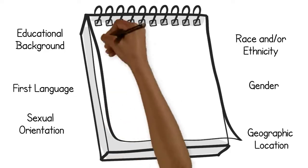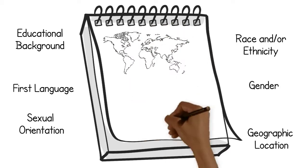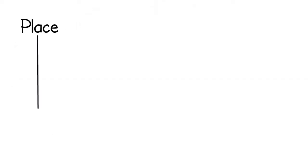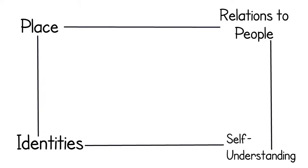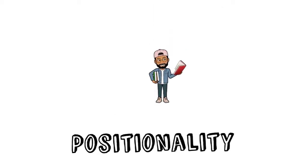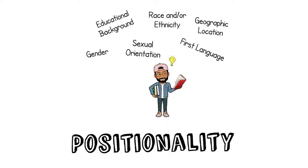These identities are given meaning and social influence by the societies we live in, and they affect how we interact with other people and how other people see us. Researchers refer to this interconnection between place, identities, self-understanding, and relations to people as positionality. Our positionality comes with experiences and perspectives that afford us unique insights that we bring into the research process.